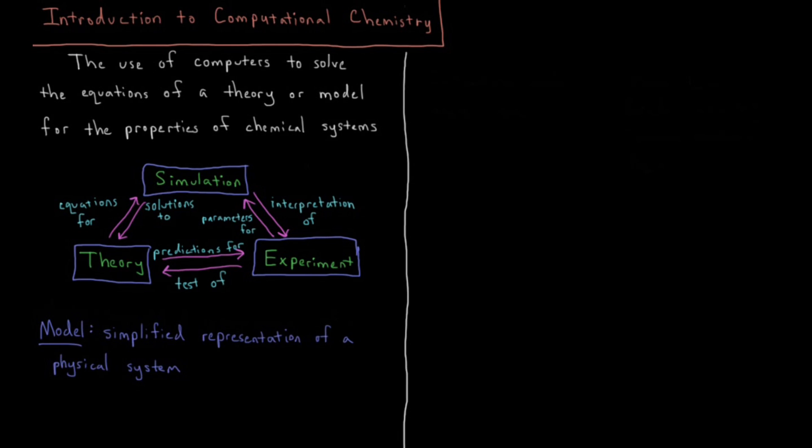Welcome to the Introduction to the Computational Chemistry Playlist. Computational chemistry can be broadly defined as the use of computers to solve the equations of a theory or model for the properties of chemical systems, or shall we say, for the prediction of the properties of chemical systems.